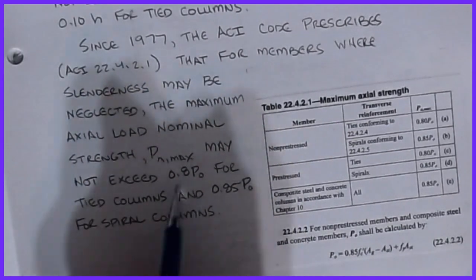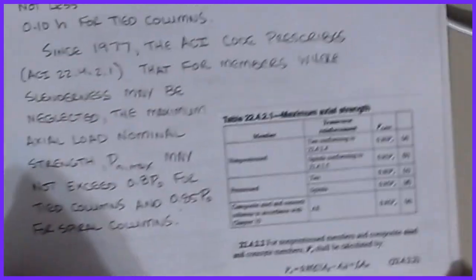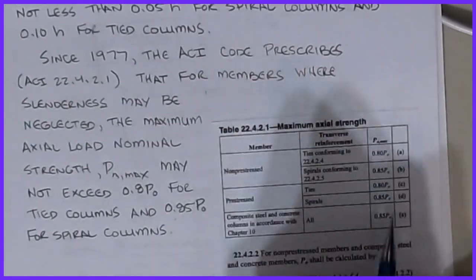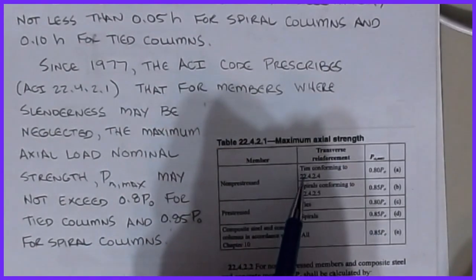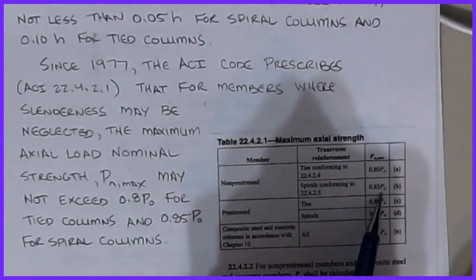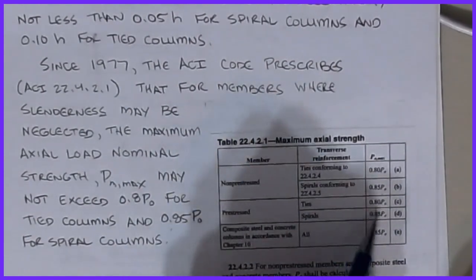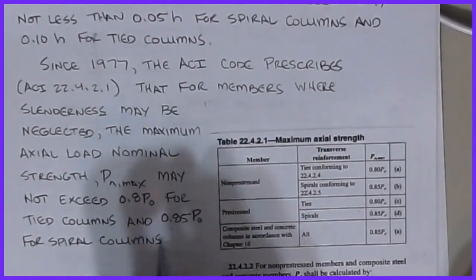This was what we talked about in the last video. Tied columns are treated differently than spiral columns. From the current ACI code, this is the table where all that starts to show up. You can see that for non-prestressed, if we have ties it's 0.8P₀, and for spirals it's 0.85P₀. If you get into prestressing, those two values are still the same, but there are some other considerations that come along with prestressing with regard to the moment that you would have to also conclude.